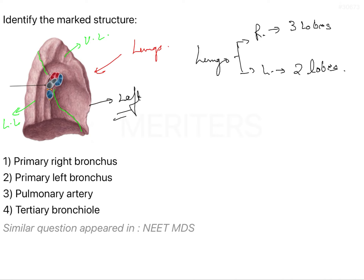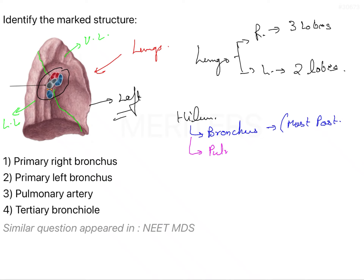Now we have to discuss about the hilum here because they have pointed out the hilum and we have to know the various structures in the hilum. If I discuss about the hilum, there will be something called the bronchus, and this bronchus you have to remember is the most posterior structure. Then we have the second thing called the pulmonary veins, and these pulmonary veins are going to be the most anterior structure.